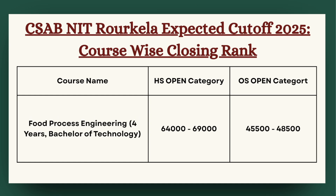Next we have Food Process Engineering. The cutoff is expected to be between 64,000 to 69,000 for HS category, and for OS category the cutoff can be expected between 45,500 to 48,500.